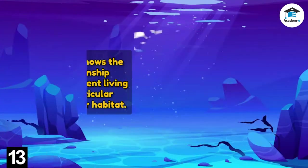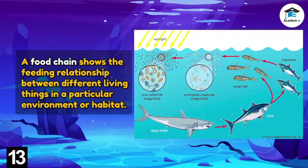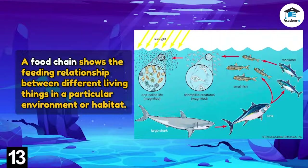A food chain shows the feeding relationship between different living things in a particular environment or habitat. It represents a series of events in which food and energy are transferred from one organism to another. An arrow indicates that an organism is eaten by another organism.